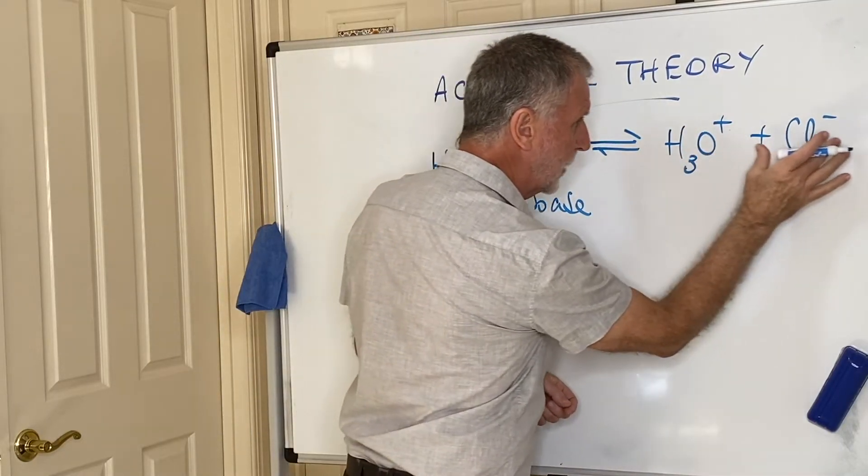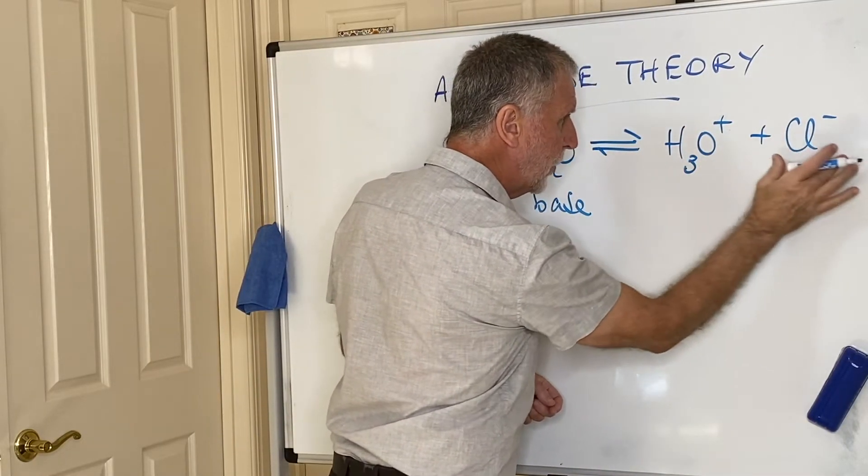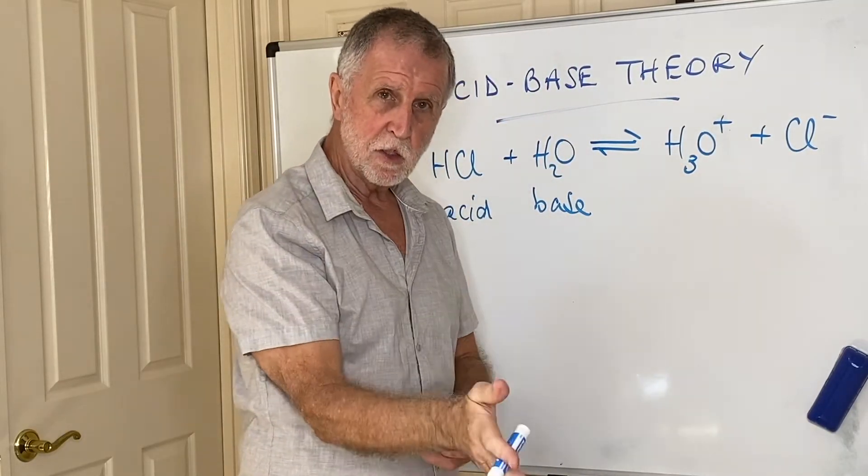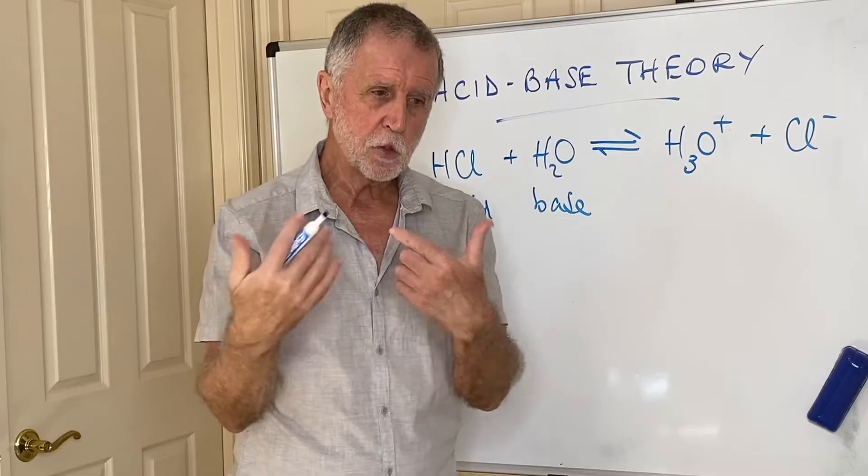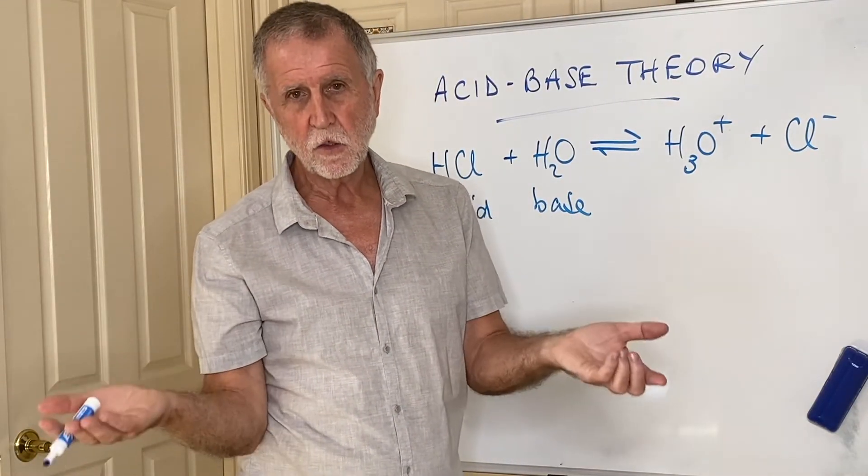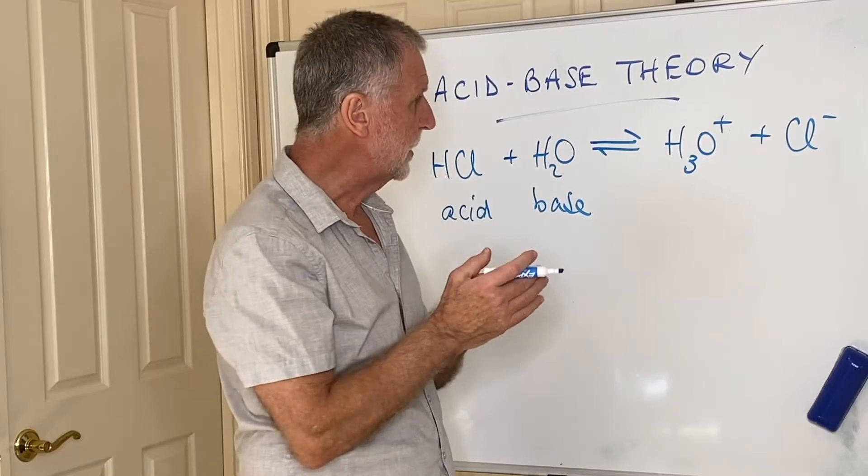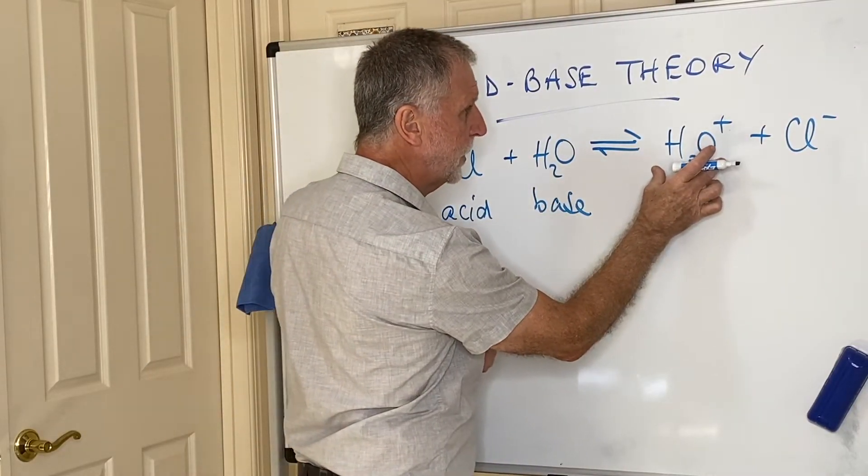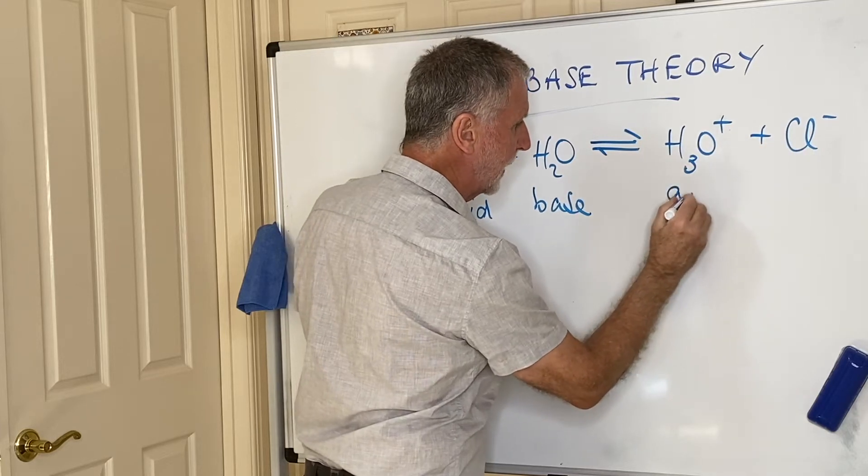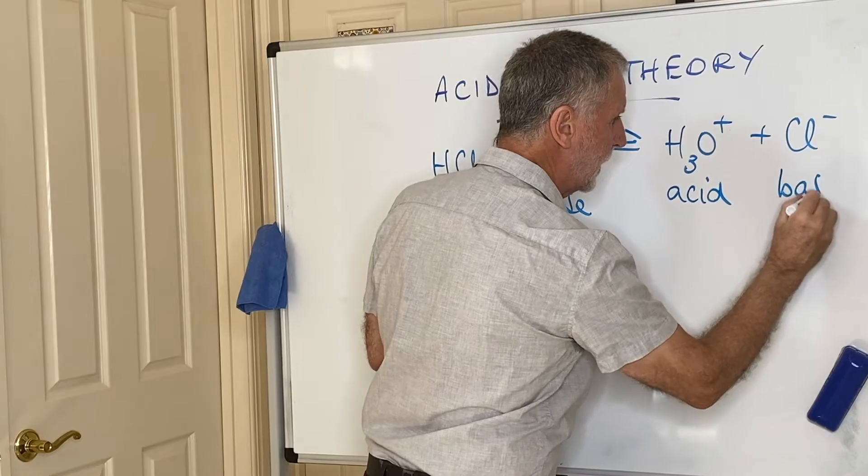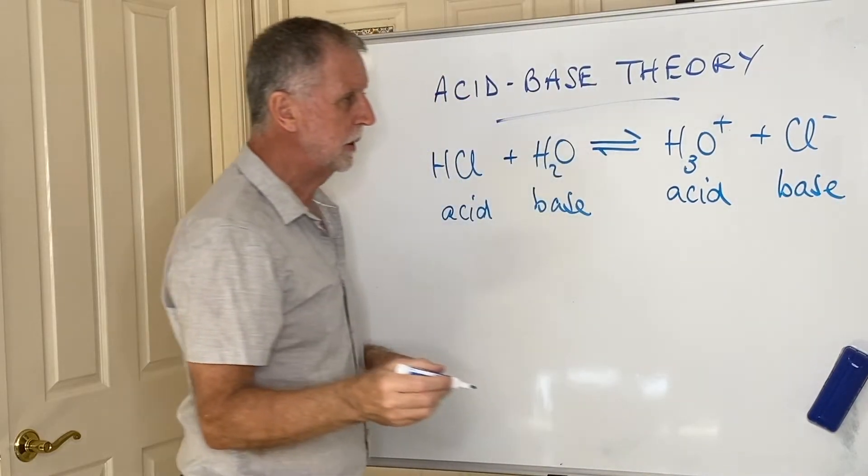So if this reacts with that, which of those would be acting as the acid and which of them would be acting as a base? Now, if I pose questions like this, pause the video if you need to and then answer it and then restart the video. Clearly, H3O+ is losing a proton and therefore it's acting as an acid and Cl- accepting that proton is acting as a base.